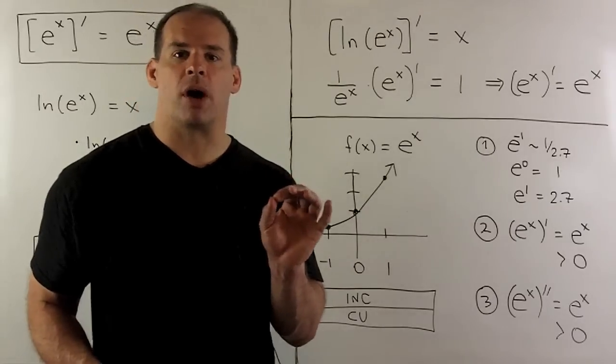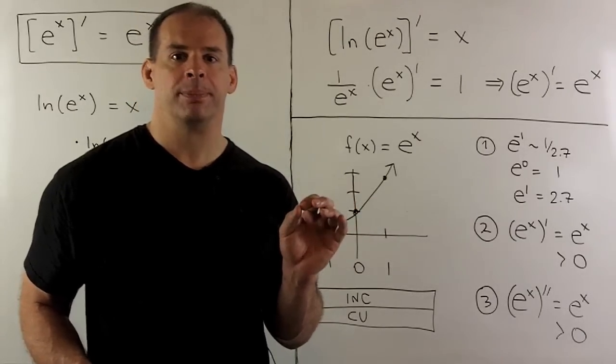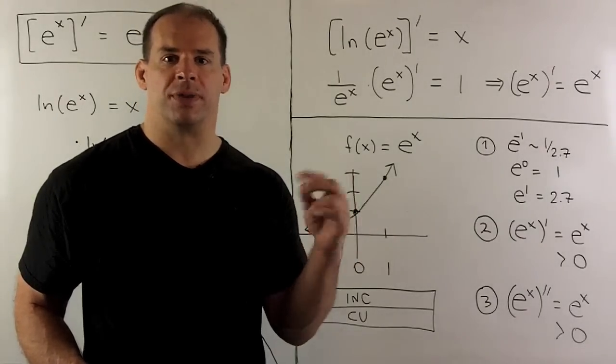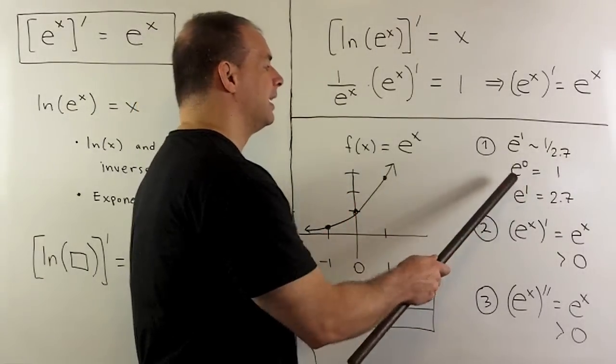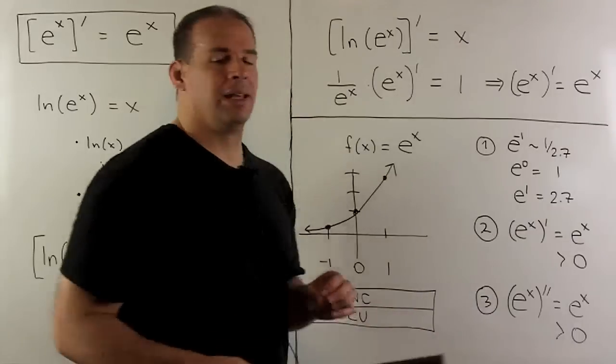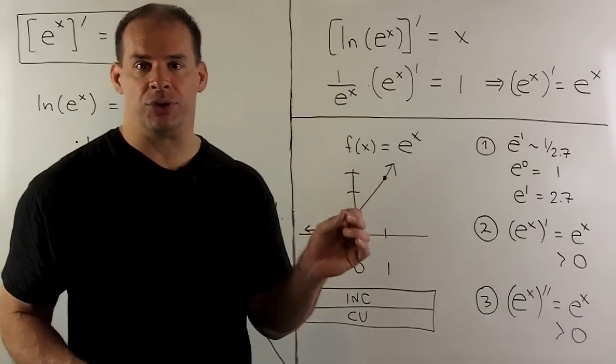Now, e is roughly 3, okay, 2.7. So, e to the minus 1, we just flip 2.7 over, it's roughly 1 third. E to the 0 is going to be 1. E to the 1 is just e, which is roughly 2.7.